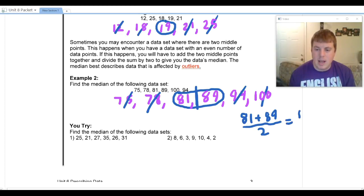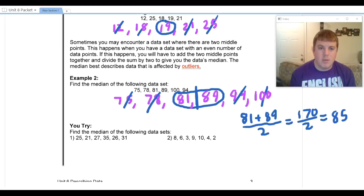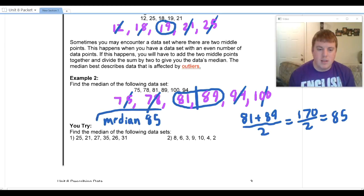So 81 plus 89 is going to be 170. I'm going to divide 170 by 2 and that is going to give me 85. So my median for this problem is going to be 85. That's going to fall right in between the 81 and the 89.